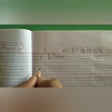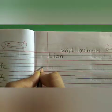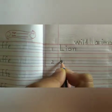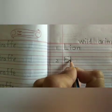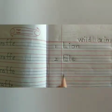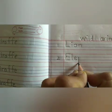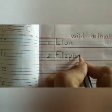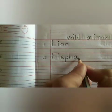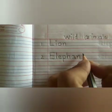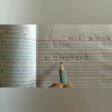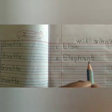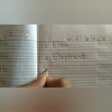Now we will write number 2 in the next line. We will write the spelling of elephant. We will write after the blue line — capital E. Small l from red line to blue line, small e between 2 blue lines, small t from blue line till red line, small h, small a between 2 blue lines, small n, small t from red line till blue line — E-L-E-P-H-A-N-T. Elephant.